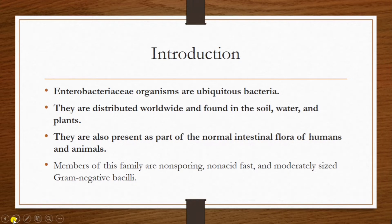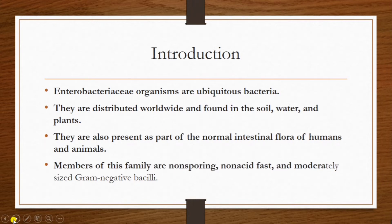Since they are common cells of the intestine, they are also called Coliform Bacteria. Members of this family Enterobacteriaceae are non-sporing, which means they do not produce any spores. They are non-acid fast and also moderately sized gram-negative bacilli.